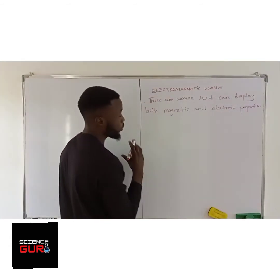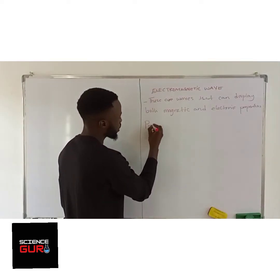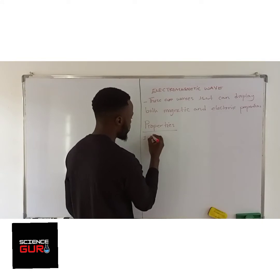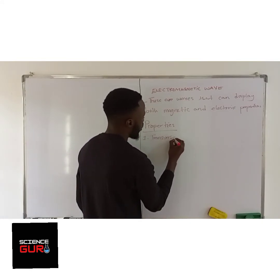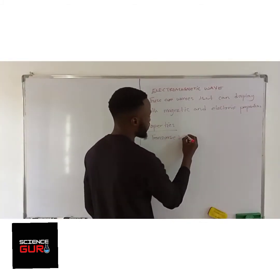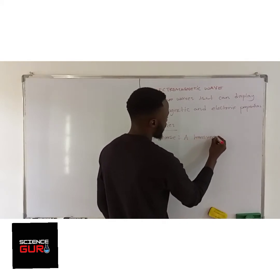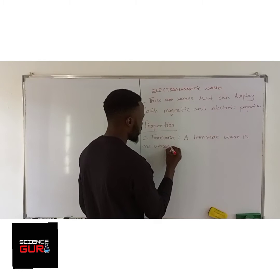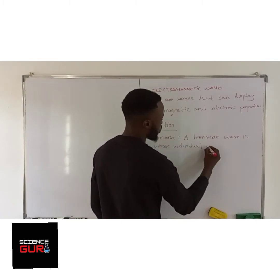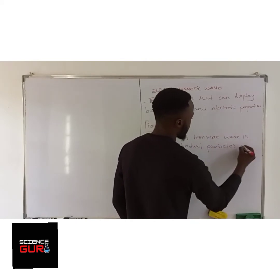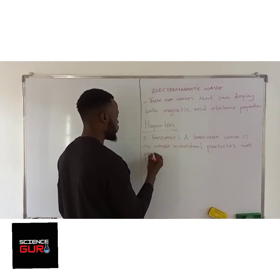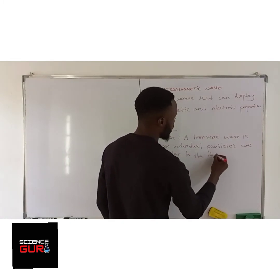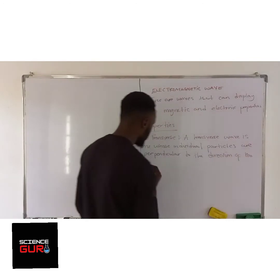These waves are made up of special characteristics — properties. Property number one: these are transverse waves. A transverse wave is one whose individual particles are perpendicular to the direction of the wave.